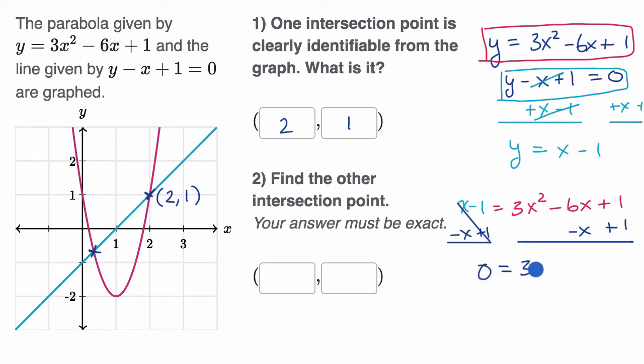And on the right-hand side, we get three x squared minus seven x plus two. So this is equal to zero.